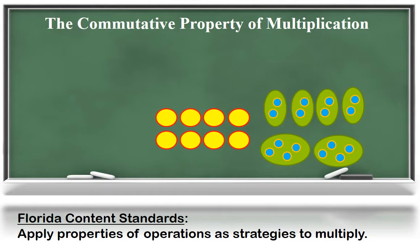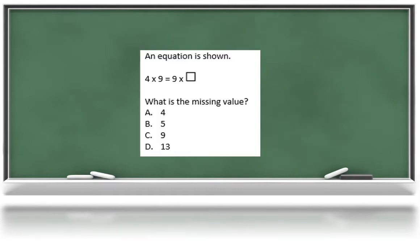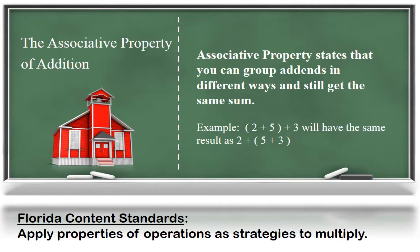This means that the expression four times two and two times four relate and give the same product. Here's an example of a commutative property type of question your child may be exposed to. An equation is shown: four groups of nine is the same as nine groups of what? What is the missing value?